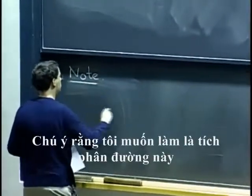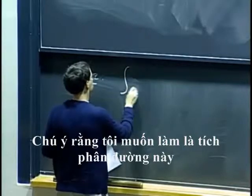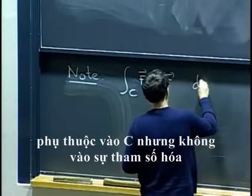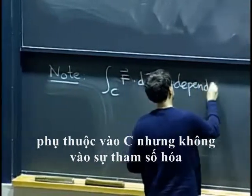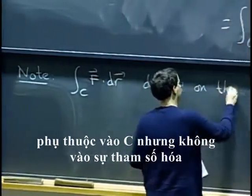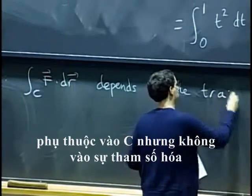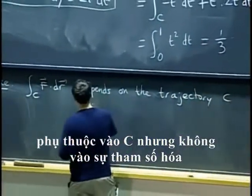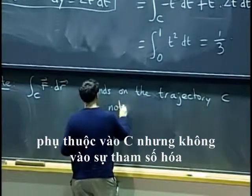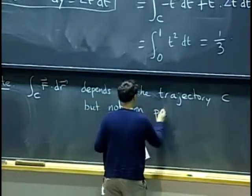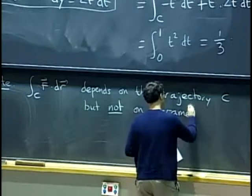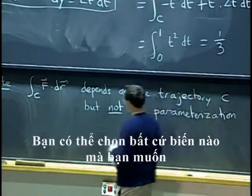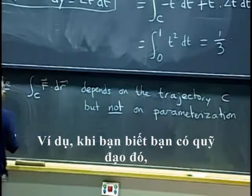So the note that I want to make is that this line integral depends on the trajectory c, but not on the parametrization. So you can choose whichever variable you want. So for example,